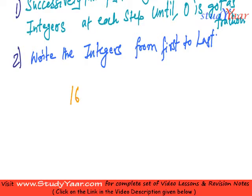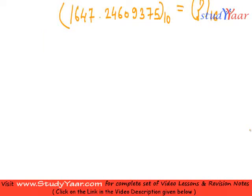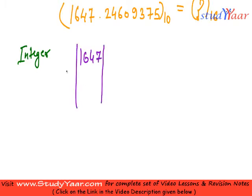My decimal number is 1647.24609375. This is my decimal number and I want to find out the equivalent hexadecimal number. So first, we are going to tackle the integer part, which is 1647. We would have to repeatedly divide it by 16. So we would get a quotient if we divide 1647 by 16, we would get a quotient.